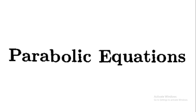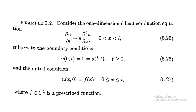In this lecture we will look at parabolic equations by the method of separation of variables. Consider the one-dimensional heat equation: ∂u/∂t = k ∂²u/∂x², for x in [0, L], subject to boundary conditions u(0,t) = 0 = u(L,t), and the initial condition u(x,0) = f(x), where f belongs to C¹ and is a prescribed function.